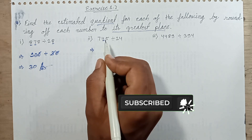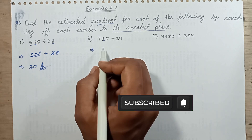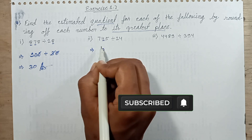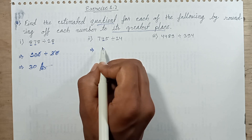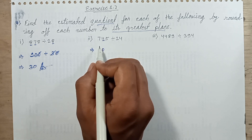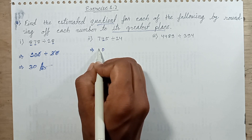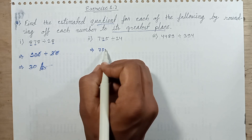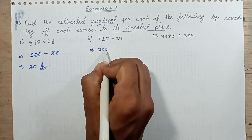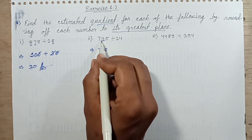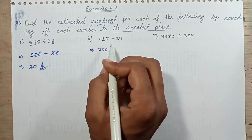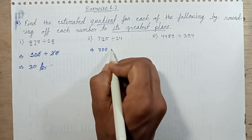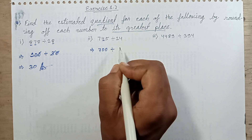The tens place digit is 4. Since 4 is less than 5, it is replaced with 0 with no increasing and no decreasing — the same digit is put in its place. Rounding of this number is 700.